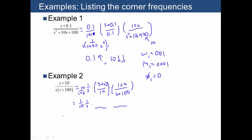If we list out the corner frequencies, we have a corner at 0 with a down arrow, a corner at 10 with an up arrow, and then a corner at 100 with a down arrow.